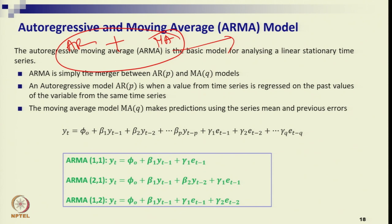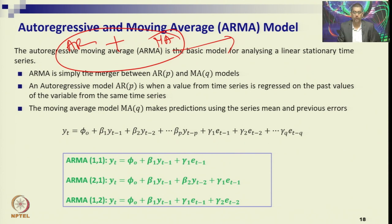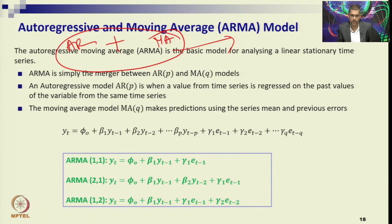Sometimes the data pattern will be so complicated that you will not be able to select the AR model or MA model through your correlogram or order. If you are confused, or both are having the same lag and cutoff, you can select the ARMA model.